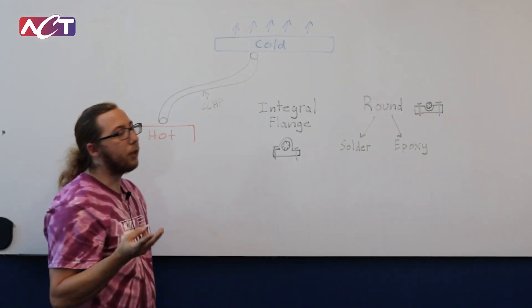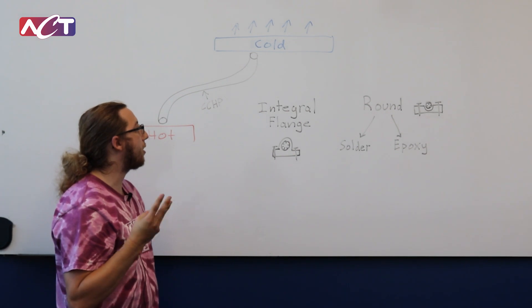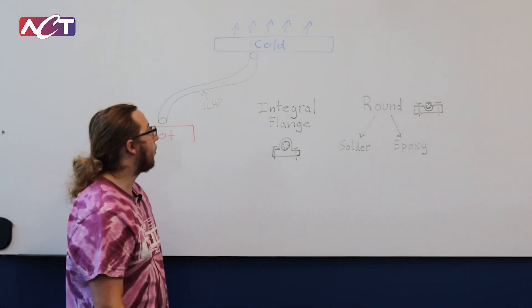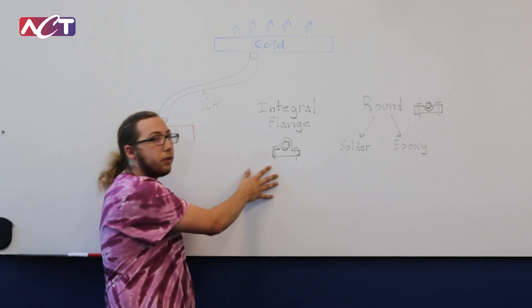So there's three main ways to actually attach a CCHP to your component. The first way is to utilize what we call an integral flange.